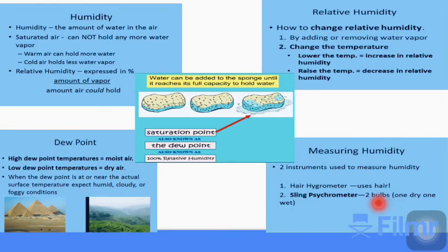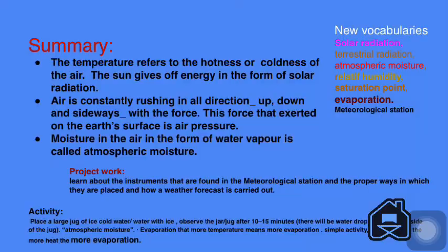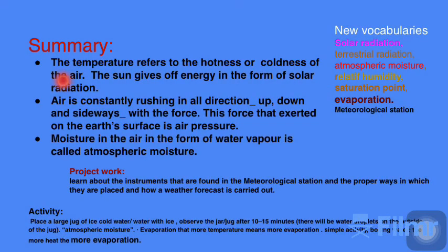Let's take a look at the summary of these three topics we learned. Temperature refers to the hotness or coldness of the air. The sun gives off energy in the form of solar radiation. Air is constantly rushing in all directions and exerting force on the surface of the earth, which is called air pressure. We learned that moisture in the air in the form of water vapor is called atmospheric moisture. The new vocabularies we learned: solar radiation, terrestrial radiation, atmospheric moisture, relative humidity, saturation point, evaporation, and meteorological station. Meteorological station is where weather forecasts are recorded.